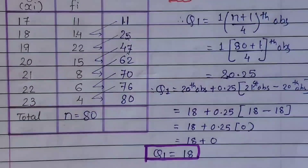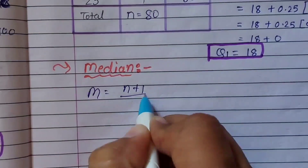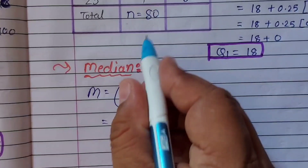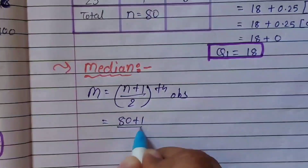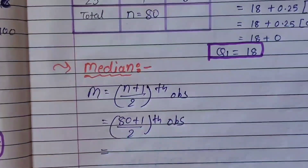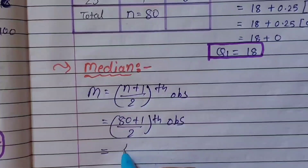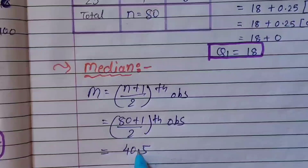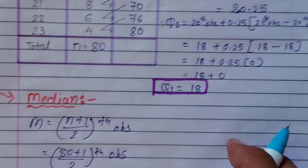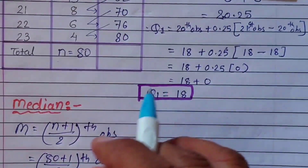Now we will calculate the median. For median, the formula is (n+1) / 2th observation. With n = 80: (80+1) / 2 = 81 / 2 = 40.5. If you find exactly 40 in the CF, then apply the big formula. Otherwise, directly find where 40.5 sets — the first CF greater than 40.5.